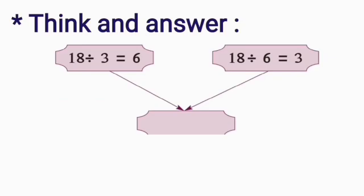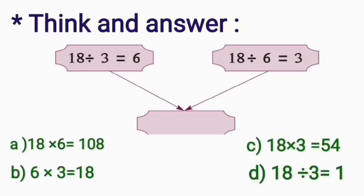Next question. Think and answer. 18 divided by 3 is equal to 6. 18 divided by 6 is equal to 3. So, let's see what comes here. Children, it's the multiplication property. Now, let's see what will come here. 18 divided by 3 is equal to 6. Then, 18 divided by 6 is equal to 3. Now, let's see from these 4 options, which is the correct answer.